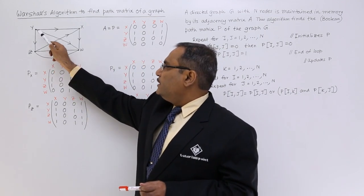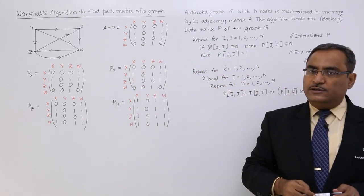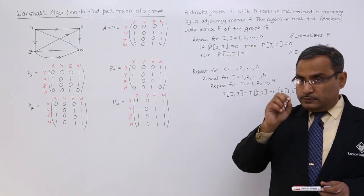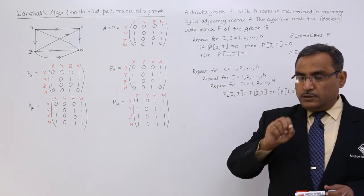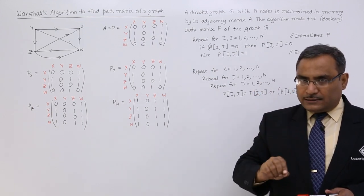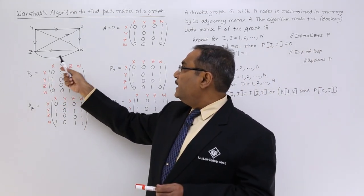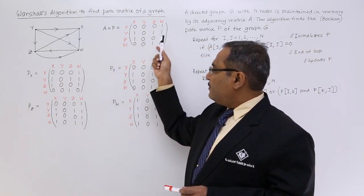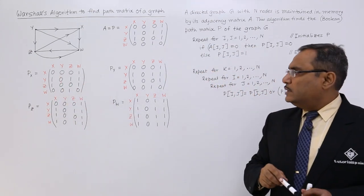From z to y I cannot move. This particular matrix is very much logical. Now, we are going to take each and every node as intermediate one to generate more paths. Now if you go for P_x you see almost the same matrix we are getting. P_x could not change anything.